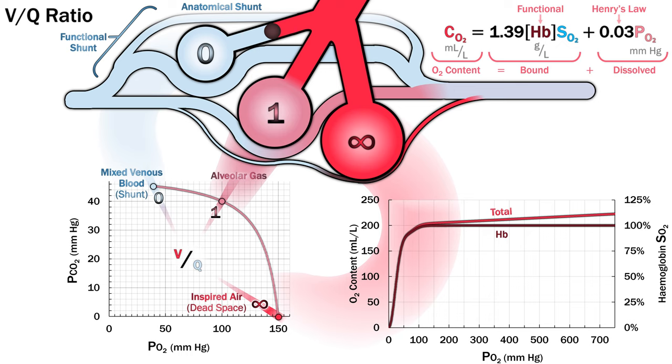Most oxygen in blood is bound to hemoglobin, as you can see on the graph in the bottom right. For someone with a hemoglobin concentration of 144 grams per liter, or 14.4 grams per deciliter, well oxygenated blood will have an oxygen content of roughly 200 mils per liter of blood.